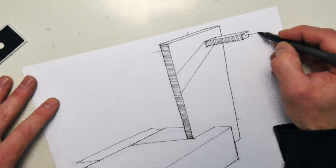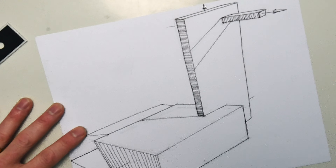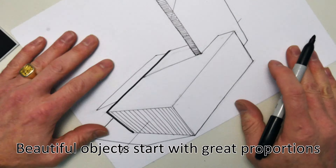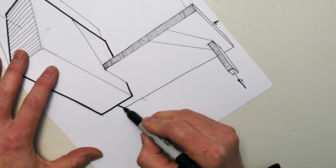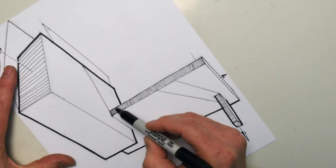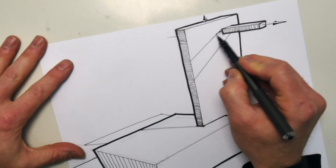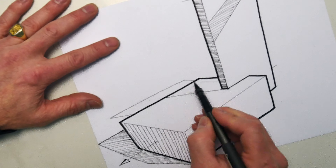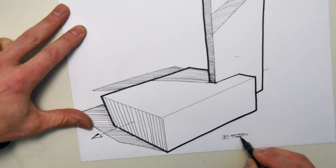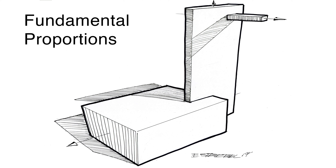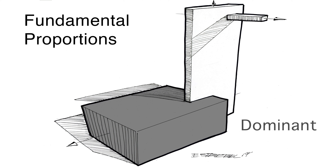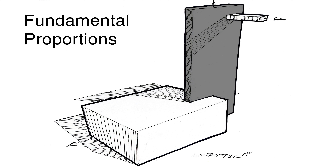Part of being an industrial designer is trying to design beautiful things. After all, we're trying to convince our clients that if you're going to manufacture something, you might as well make it attractive or beautiful so that you can sell more of them. In order to understand what makes things beautiful, you need to understand proportions, because it doesn't matter how beautiful you make something if your proportions suck — you can put lipstick on a pig, but it's still a pig.